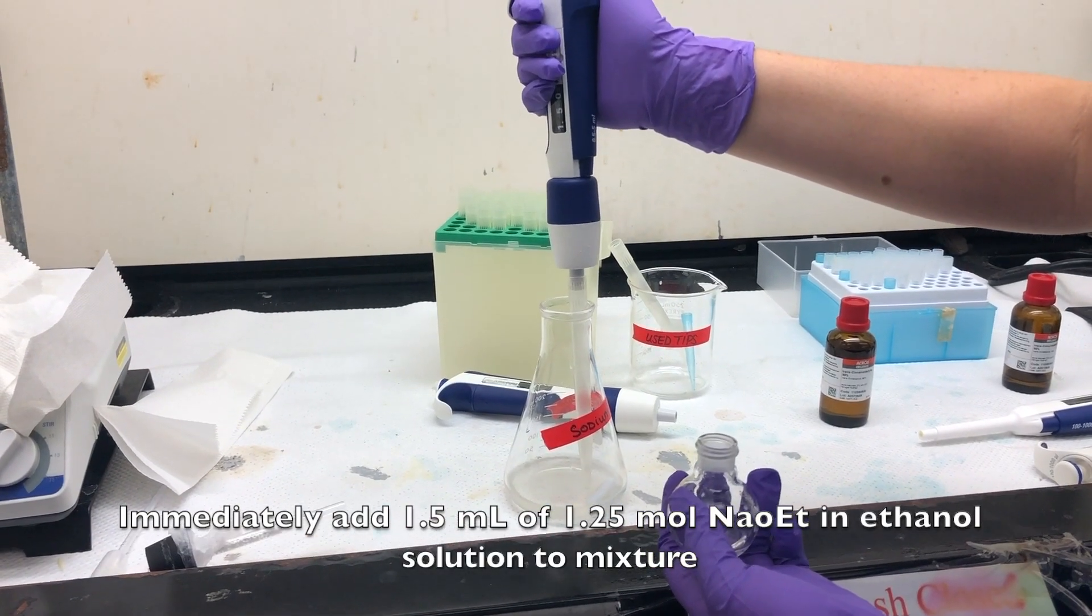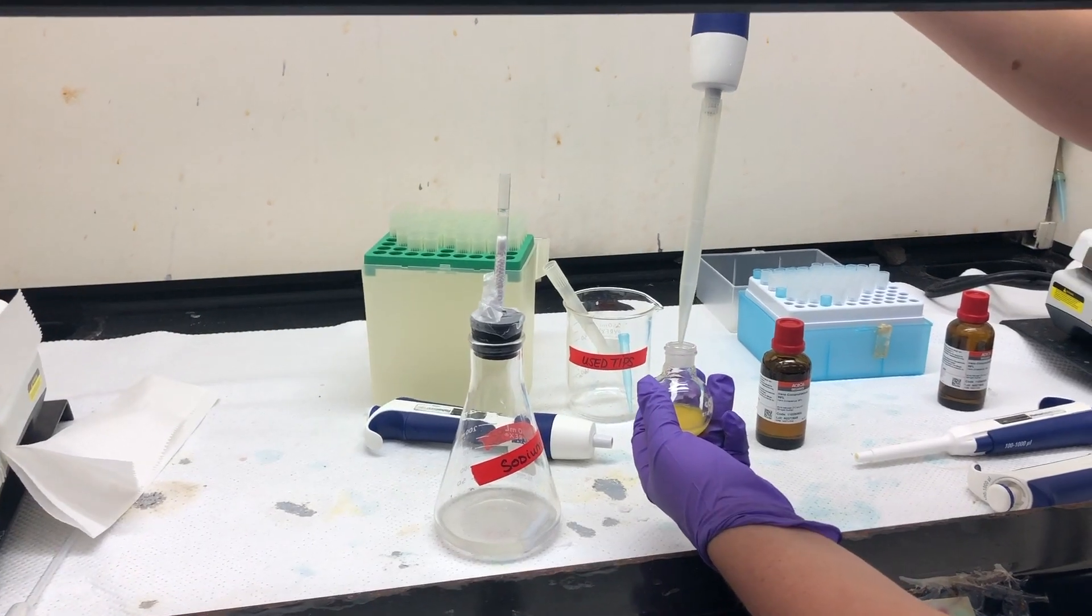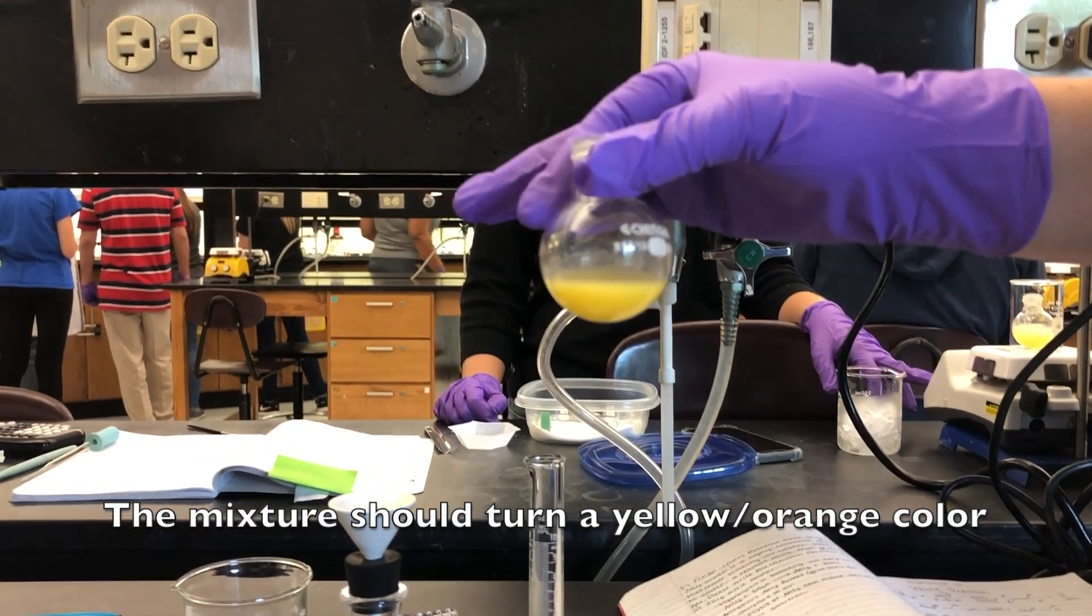Immediately add 1.5 milliliters of sodium methoxide and ethanol solution to the mixture. The mixture should turn a yellow orange color.